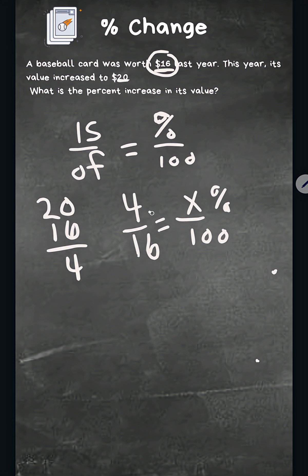So now we just cross multiply. Four times 100 is 400 equals x times 16. So we have 16x. Let's divide through by 16 on both sides.